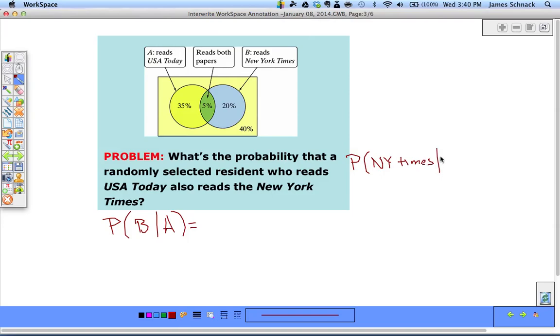Our formula says probability of A and B divided by probability of our condition, which is probability of A in this problem. So 5% on top divided by the probability that they read USA Today. That's this entire circle, not just the 35%, but it's 40%. And we get 0.125.